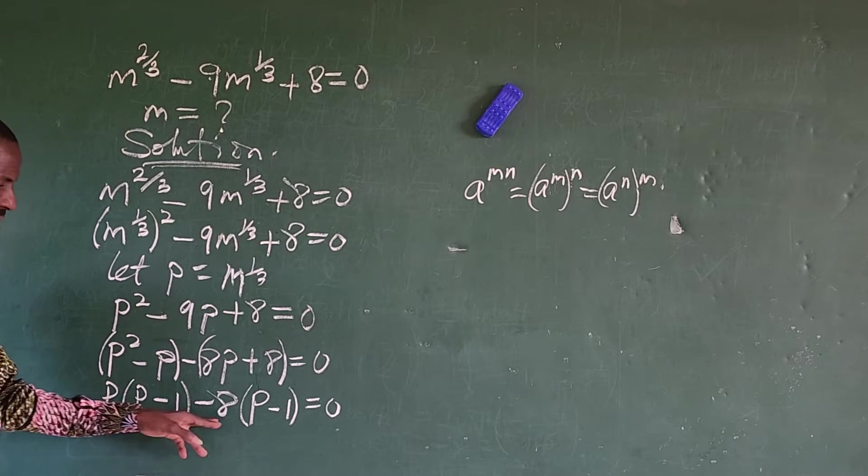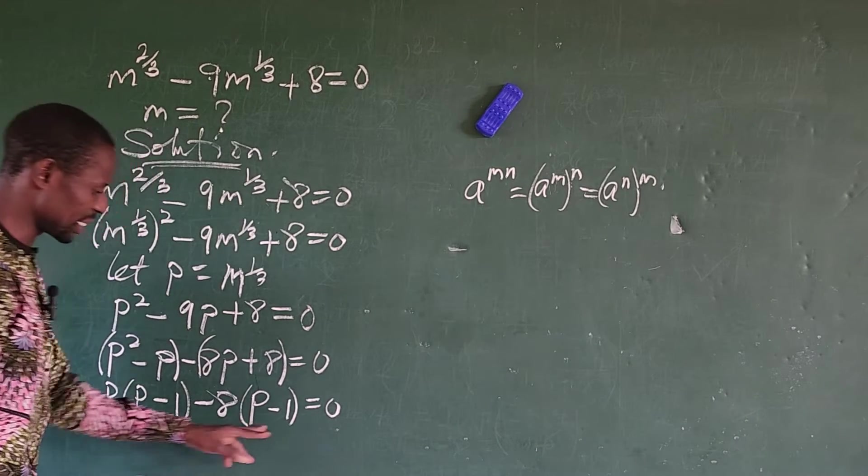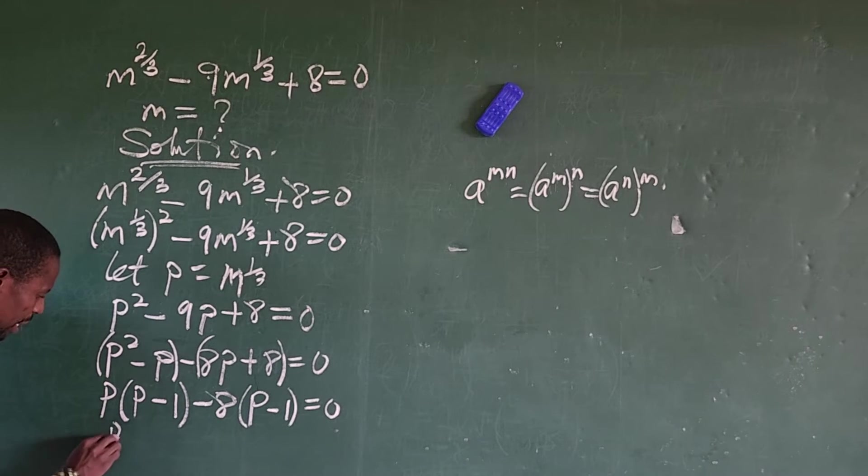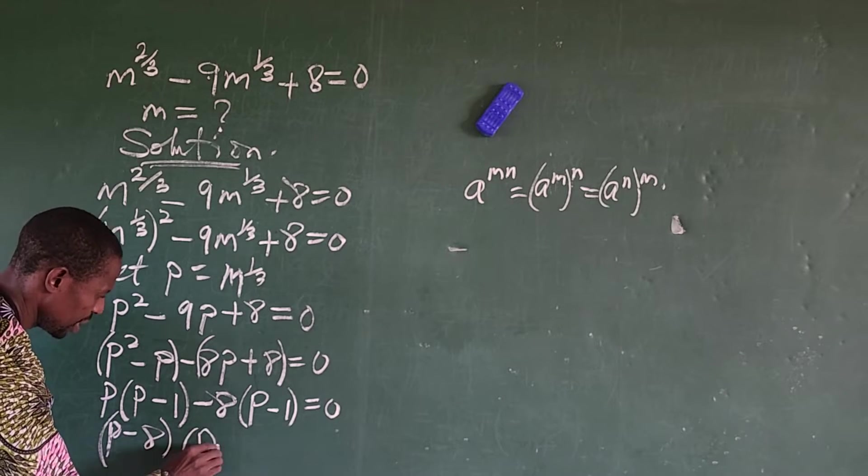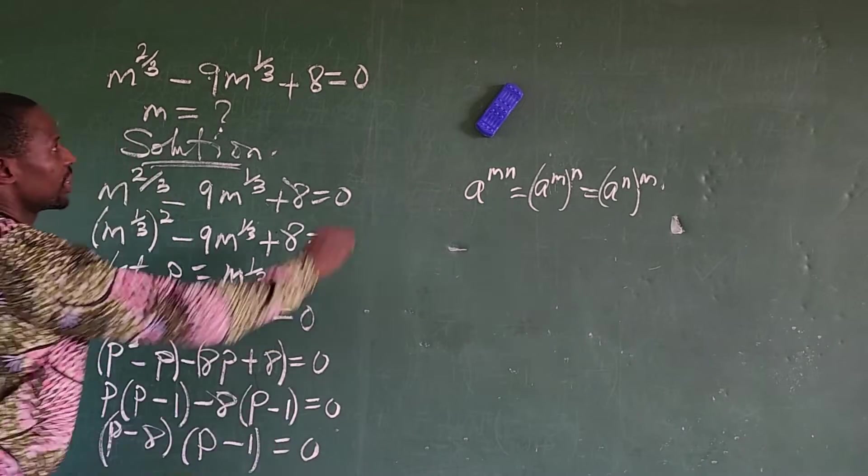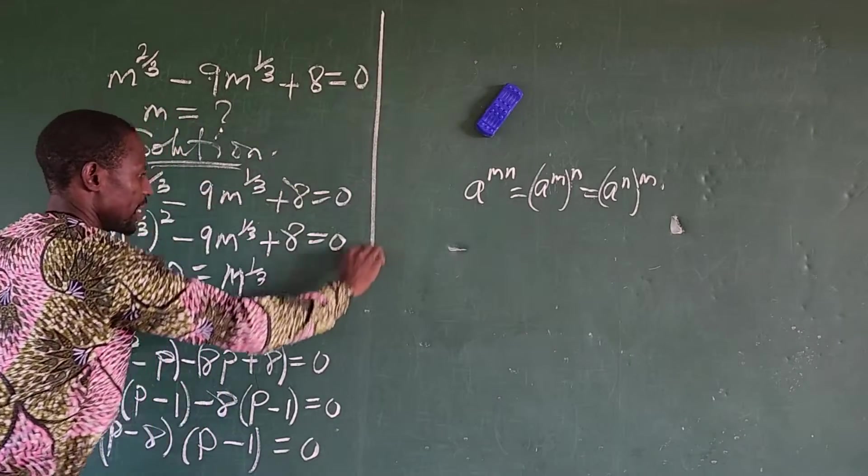So we have 8 bracket, so 8 times p will give us p, then minus times plus will give us minus 1 in bracket equals 0. So at this point now, you'll discover what we have here and what we have here are the same. So we take this outside and take one of them inside.